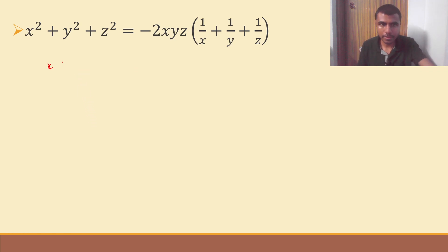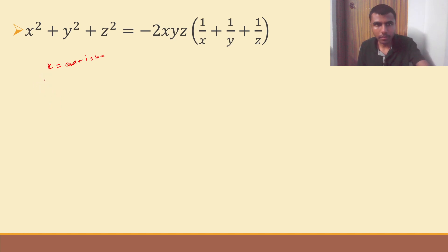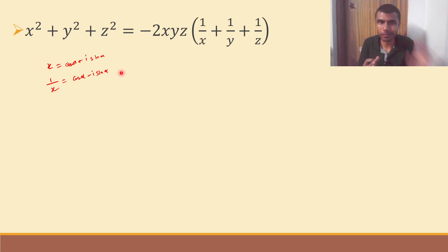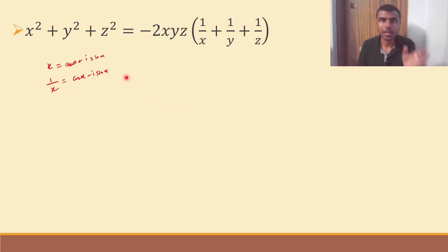Now, what is our x? x is cis α, that means cos α plus i sin α. When x is cos α plus i sin α, 1/x is nothing but cos α minus i sin α. In case you want to know how 1/x equals cos α minus i sin α, request in the comments — I'll help you out there, because if I cover it here the video could become a bit lengthy. So 1/x is cos α minus i sin α.